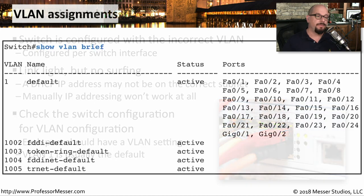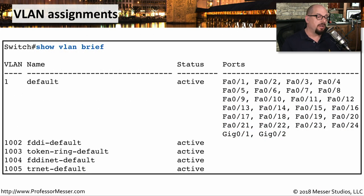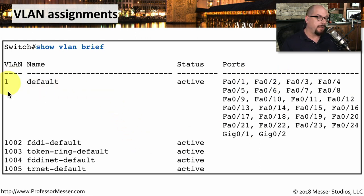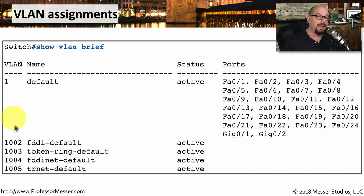Here are the VLAN settings on a switch. All devices on this particular switch are configured for VLAN 1. But if any of these interfaces showed on a different VLAN, you would need to check your documentation and make sure that's exactly the VLAN for that device.